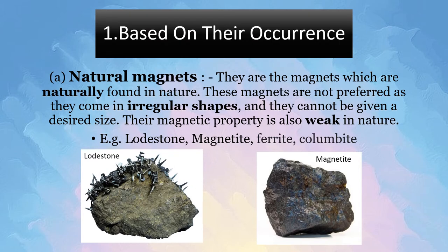Under the first category, the first type is natural magnets. They are magnets which are naturally found in nature. These magnets are not preferred as they come in irregular shapes and you cannot cut them into your desired size — for example, you cannot shape them into a bar magnet. Their magnetic property is also weak in nature. Some examples are lodestone, magnetite, ferrite and columbite.